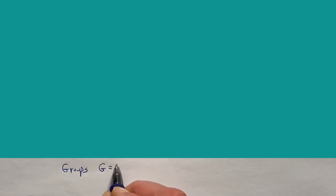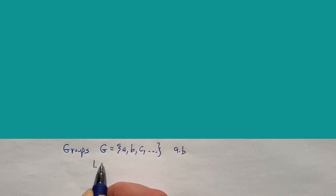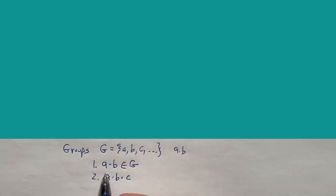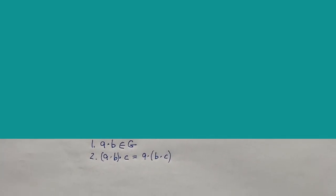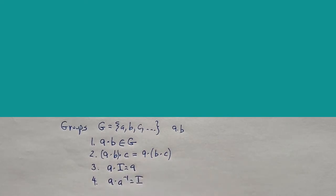Then for groups — there's a lot in this first chapter. A group consists of elements A, B, C with a binary operation that satisfies four conditions: (1) closure — A times B is an element in the group; (2) associativity — applying the first two and then the third is the same as doing the last two first; (3) identity; and (4) inverse. Those are the properties of a group.